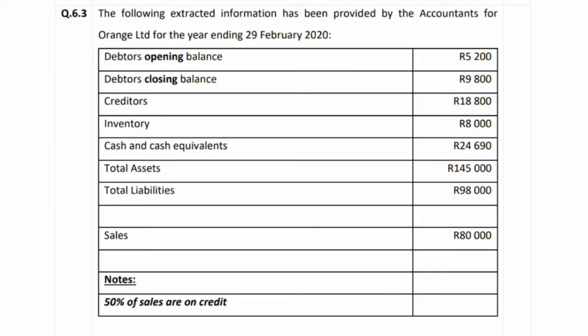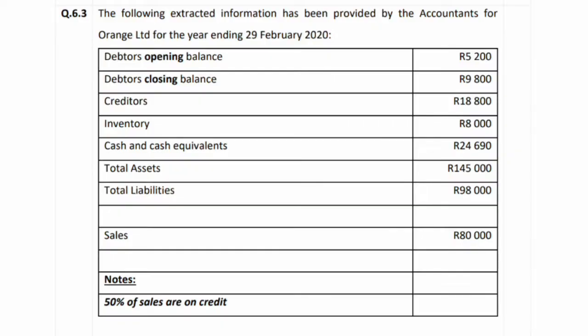In this video we go through questions related to financial analysis and interpretation. We check our information first — question 6.3 gives us extracted information for Content Orange Ltd for the year ending 29 February 2020. We have opening and closing balances for debtors, creditors, inventory, and cash equivalents, plus total assets and total liabilities. Remember: total assets contain non-current and current assets; total liabilities contain current and non-current liabilities.